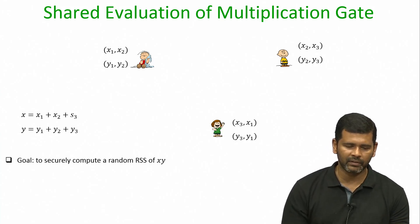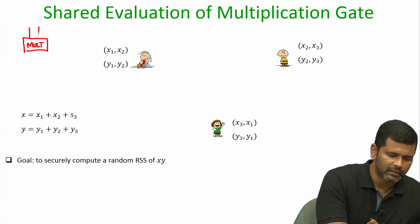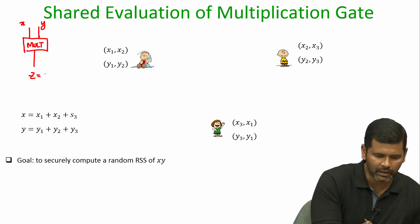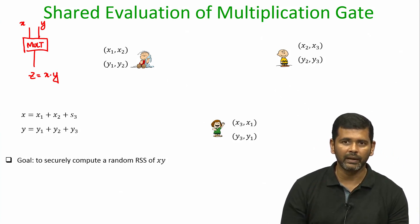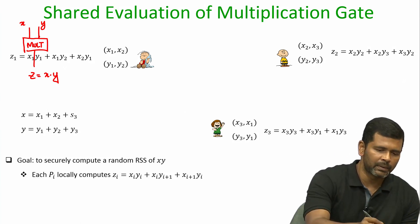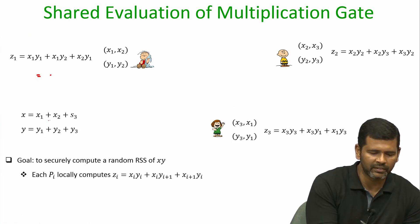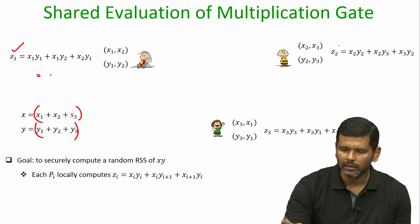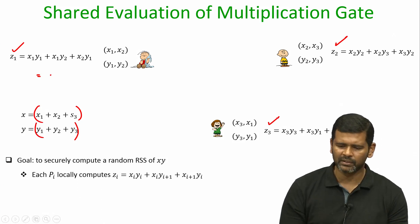To quickly recap: in the last lecture we saw that if we are in a scenario where the inputs of a multiplication gate are secret shared in replicated RSS format, and we want the multiplication gate output also to be available in RSS secret shared fashion, in the process we do not want to reveal any information about X and Y, and we also want to minimize the communication. The protocol proposed was to ask each party to compute a summation of three summands in the expansion of X times Y — P1 finds Z1, P2 computes Z2, and P3 computes Z3.